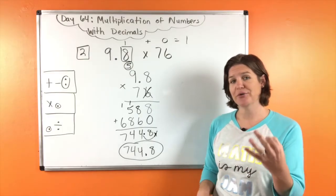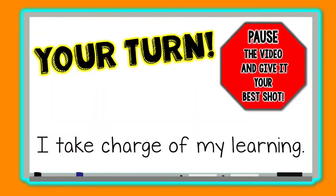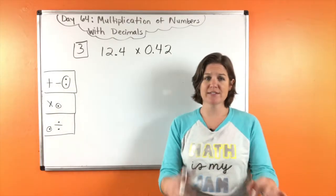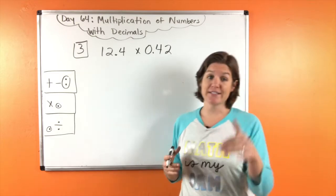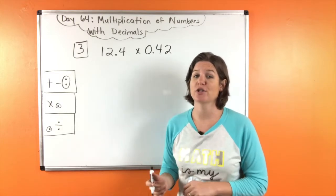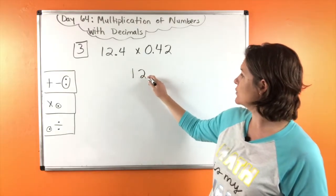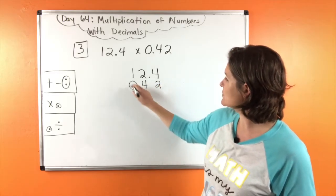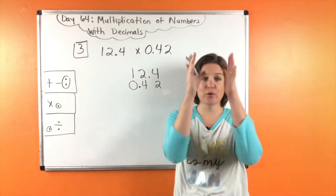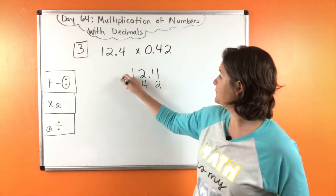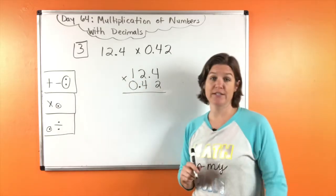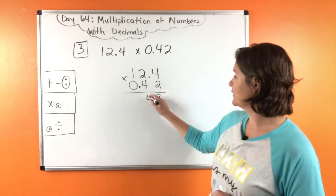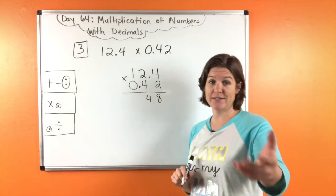Go ahead and jot down any work that you still need to get copied. Then I want you to try number three on your own and then come back to check your work. Alright, number three — we have twelve and four tenths times forty-two hundredths. Let's see how you did because you should have solved this one on your own. So the first thing I would do would be to write down twelve and four tenths vertically. I'm not worried where the decimal is — they don't have to be lined up when we multiply. Two times four is eight. Two times two is four. Two times one is two.